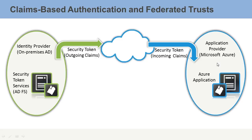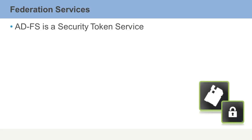If it is an authenticated request, it will grant that request access to the application. Federation Services itself is this security token service — it simply creates the token, which can then be sent out and processed by the application provider.